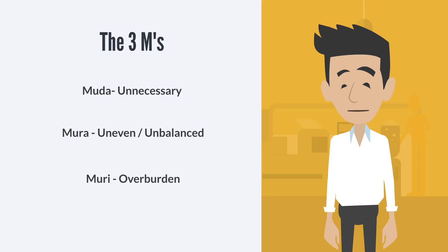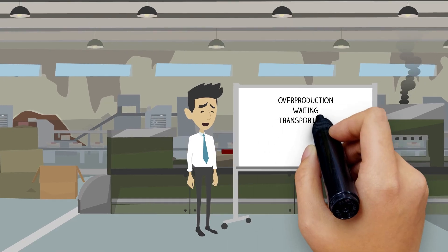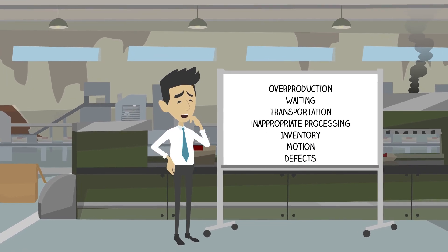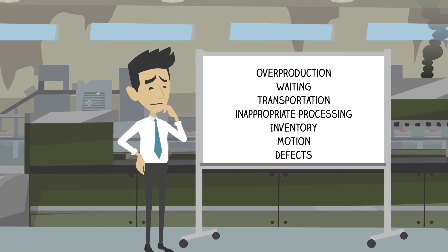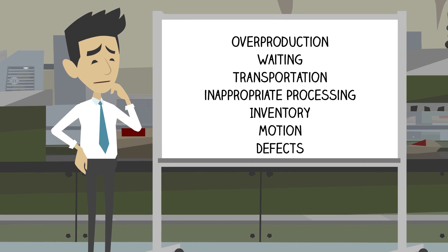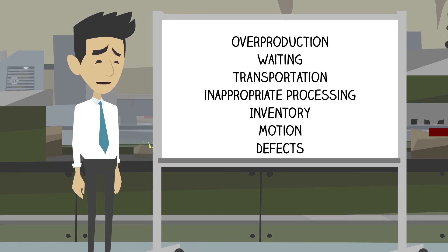Concepts such as standard work, line balancing, total productive maintenance, and several other tools and concepts can be used to address Muri. As he began to develop what is now known as the Toyota production system, Taichi Ono identified seven wastes that are considered Mura.